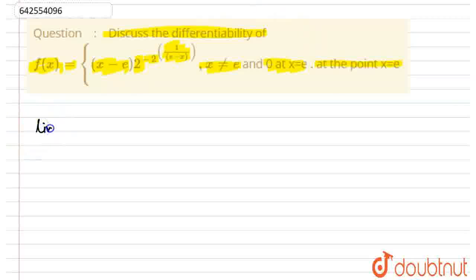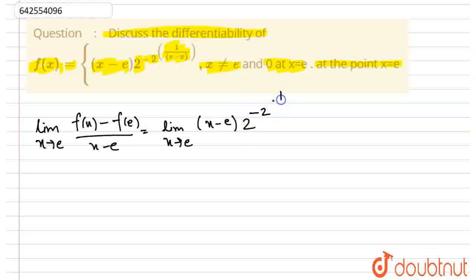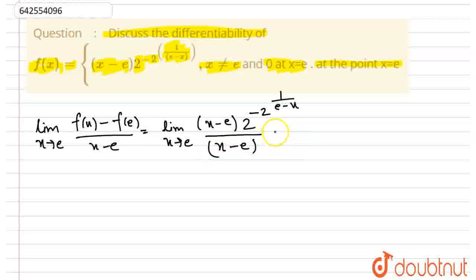Now for this, we need to find the limit as x goes to e of [f(x) minus f(e)] upon (x minus e). That is equal to the limit as x goes to e of (x minus e) times 2 to the power of minus 2 to the power of 1 upon (e minus x), all divided by (x minus e). So that simplifies to the limit as x goes to e of 2 to the power of minus 2 to the power of 1 upon (e minus x).